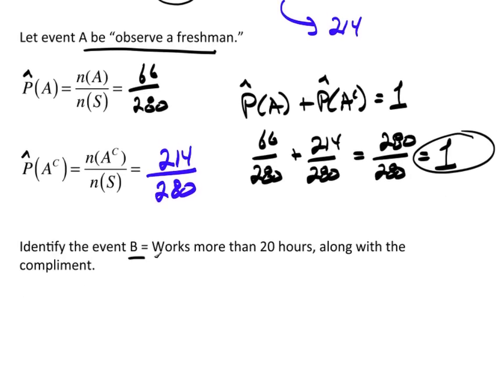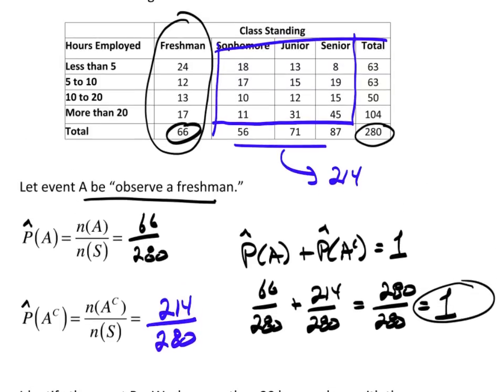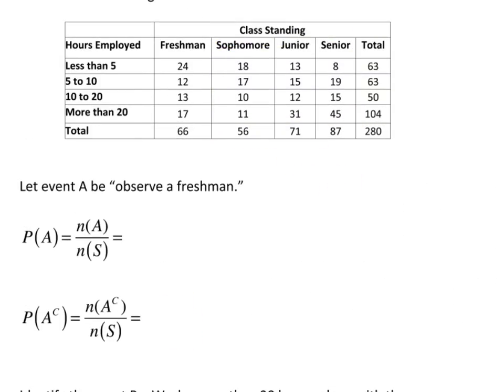Now, event B works more than 20 hours. So I want to identify that event along with the complement. Well, what works more than 20 hours? Let's see here. Let's get rid of all that writing and start over. More than 20 hours, that's right here. It has a total of 104.